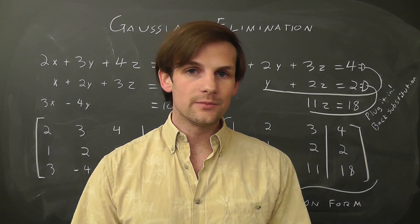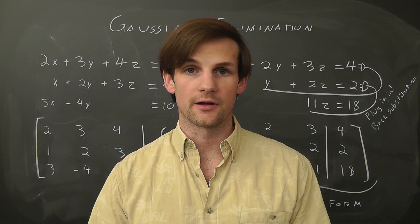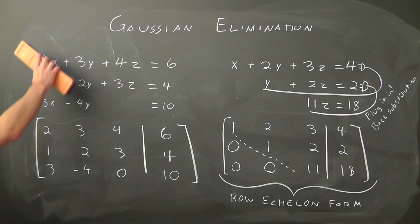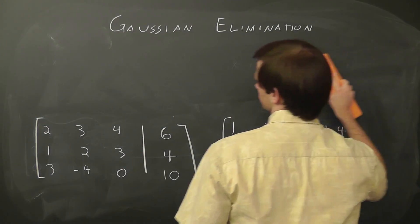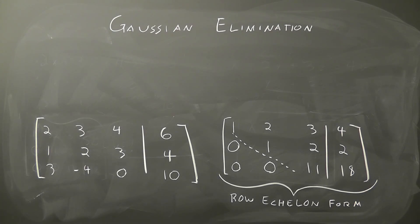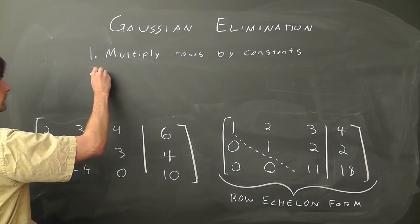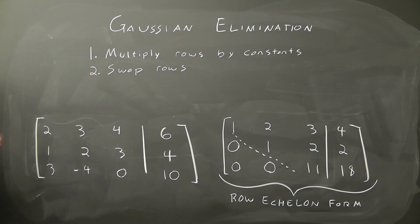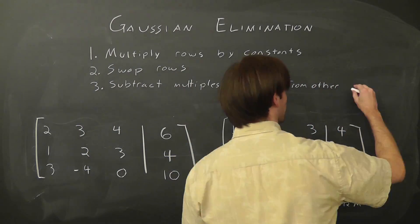Now, there are some nuances to this argument, but please go to the Algorithm Archive if you need more information on that. Now, how exactly did we get from the first matrix to the second? Well, we use a combination of three basic rules. One, we can multiply any row by a non-zero constant. Two, we can swap any rows. Or three, we can subtract a multiple of any row from any other row.